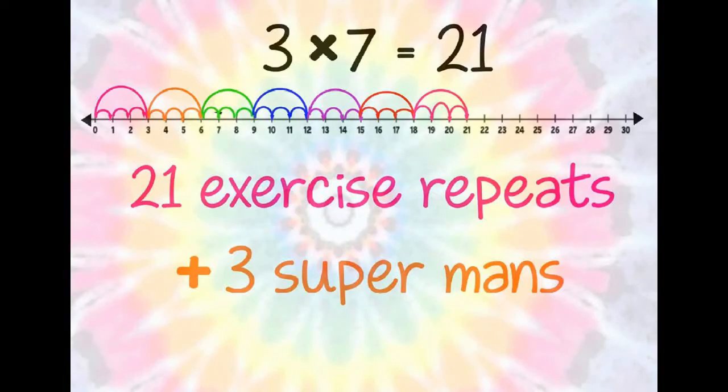3 times 7 is 21. We have completed 21 exercise repeats. Now we will add 3 supermans.